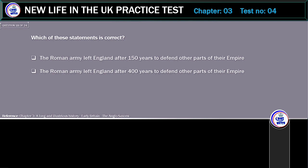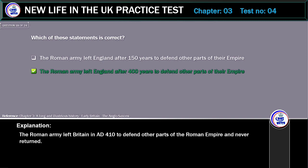Which of these statements is correct? The Roman army left England after 150 years, or after 400 years, to defend other parts of their empire? The correct answer is 400 years. The Roman army left Britain in AD 410 to defend other parts of the Roman Empire and never returned.